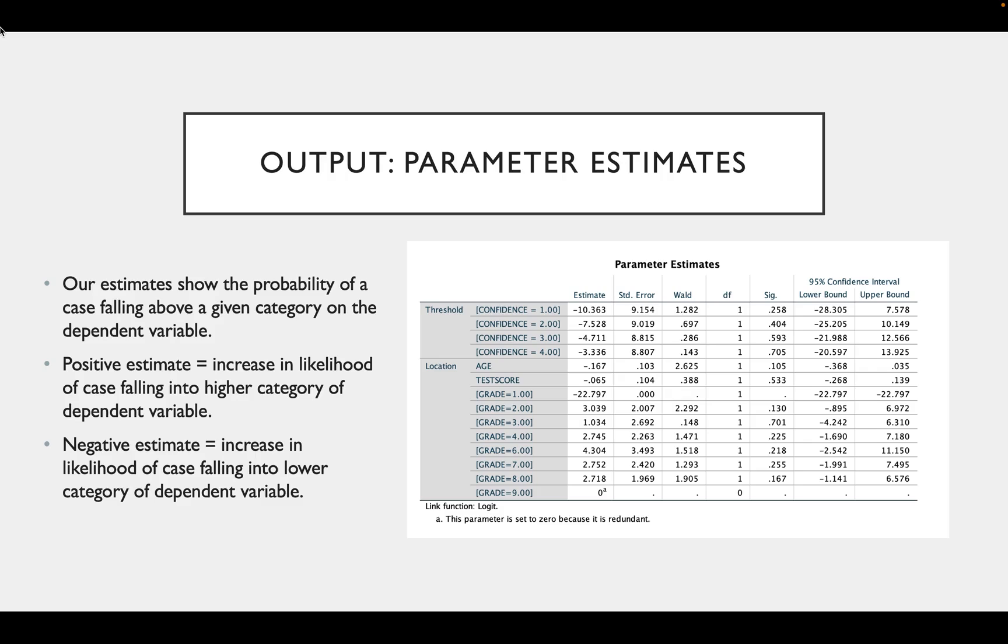A negative estimate like age indicates an increase in likelihood of a case falling into a lower category of a dependent variable. So what this means is that as people's age increased, they become less confident. However, as you can see from this box, at the sig line, none of our variables were significant. But again, this was just an example, so it was run on a very small amount of data.